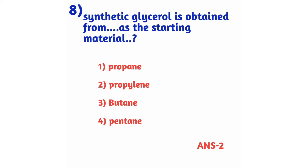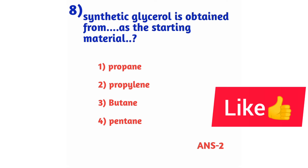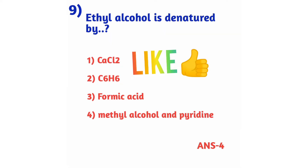Question number 8: Synthetic glycerol is obtained from which starting material? Option 1: propane, option 2: propylene, option 3: butane, option 4: pentane. Synthetic glycerol is obtained from propylene, so the right answer is option 2. Ethyl alcohol is denatured by methyl alcohol and pyridine.